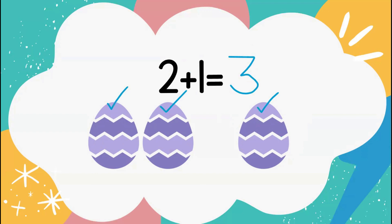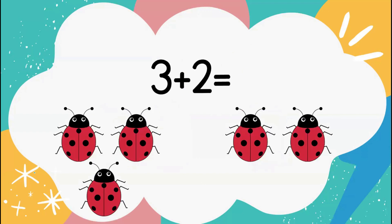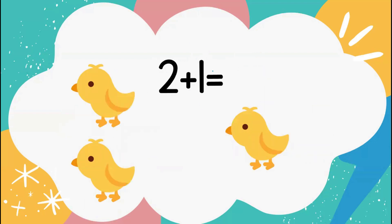Excellent adding. Now we have our ladybug friends, represented by 3 plus 2. Let's count the total ladybugs: 1, 2, 3, 4, 5. 3 plus 2 gives me 5. Excellent job. For our next problem, we have 2 plus 1. Let's count the total chicks: 1, 2, 3. 2 chicks plus 1 chick gives us 3 chicks. Excellent job adding.